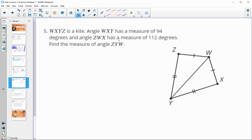Number five, we have a kite. Angle WXY, so this one here, WXY, is 94 degrees. Angle ZWX, so this larger angle here, is 112 degrees. Find the measure of ZYW, so find the measure of ZYW, this angle here, so this is the one we're looking for.